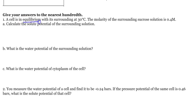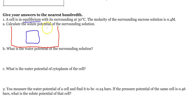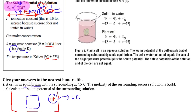The cell is in equilibrium — meaning isotonic — water is entering the cell as fast as it's leaving. The molarity of the surrounding solution is 0.4. Molarity is a concentration, so this 0.4 molar is basically equal to the C in our formula. They also give us a temperature of 30 degrees Celsius. They want to know the solute potential of the surrounding solution.